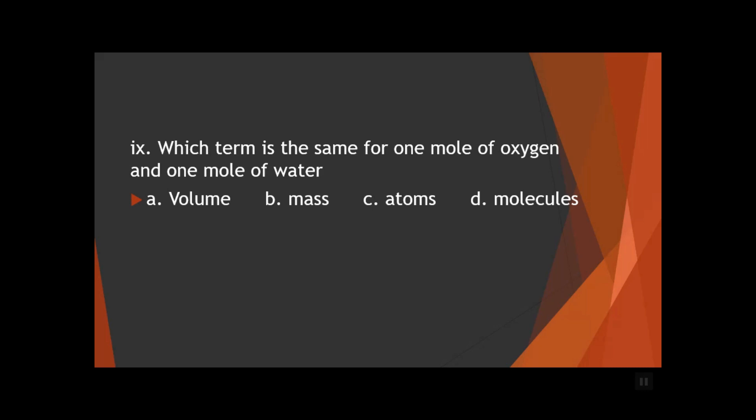Question 9: which term is the same for one mole of oxygen and one mole of water? Options are A) volume, B) mass, C) atoms, D) molecules. One mole of any substance contains Avogadro's number of particles. Volume and mass differ between the two substances. Oxygen exists as its diatomic form O₂ — it is a molecule — and water is also a molecule. So both contain Avogadro's number of molecules, making option D, molecules, the correct answer.